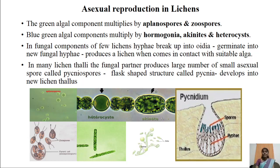If the phycobiont component is a blue-green alga belonging to Cyanophyceae, then it multiplies by three different types: hormogonia, akinetes, and heterocysts.